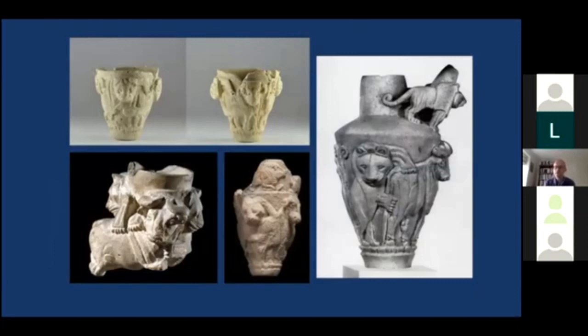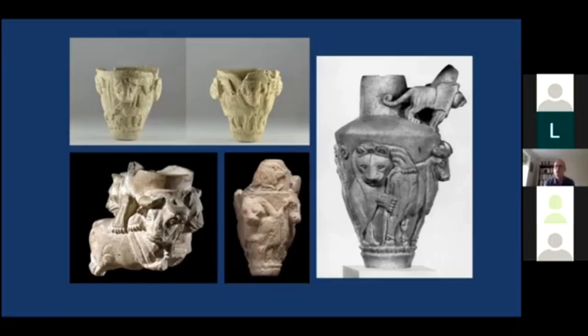Other imagery combines the domesticated animals of the farms — cattle and sheep — with the dangerous forces that threatened them from outside. Beyond the city walls, the wilderness of wild animals included lions, which, as we already saw at Tel Brak, represented the most dangerous threat to these urban centres. Here you can see images carved in stone of lions attacking bulls and cows — a recurring theme in the imagery of Mesopotamia from this time onwards, representing that close relationship between the ordered, domesticated civilised world of city life and the dangerous world beyond the city walls.